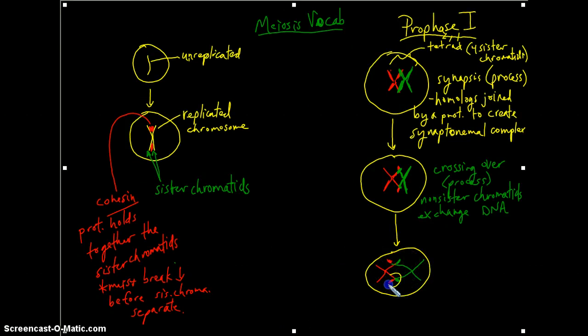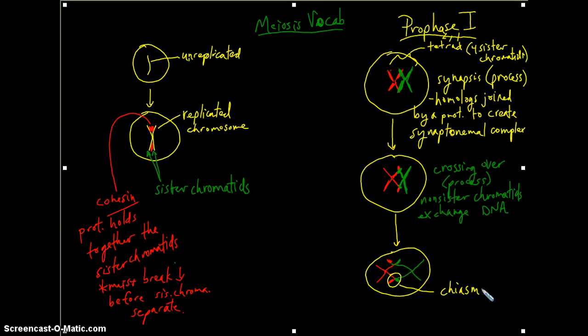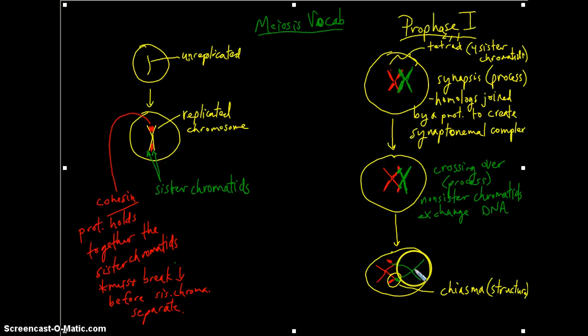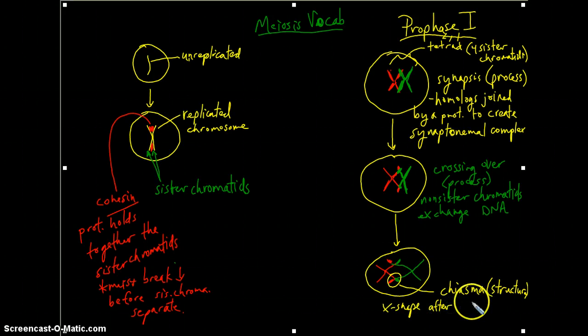It is this portion that is of interest, this overlap, this X portion or overlap portion is called the chiasma, or chiasmata for plural. This is referring to not a process, but a physical structure. This is what holds together the homologous chromosomes at the end of prophase. We can just say this is the X shape after synaptinomal complex breaks down.